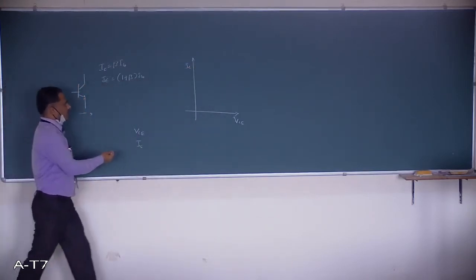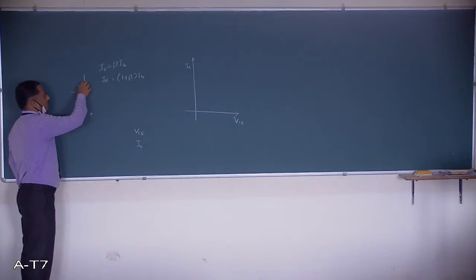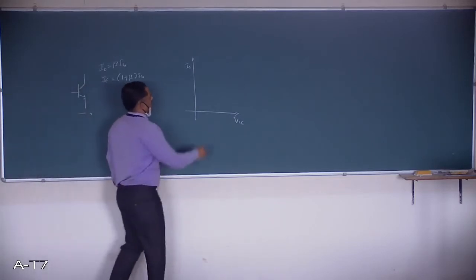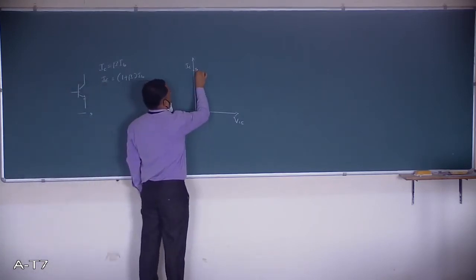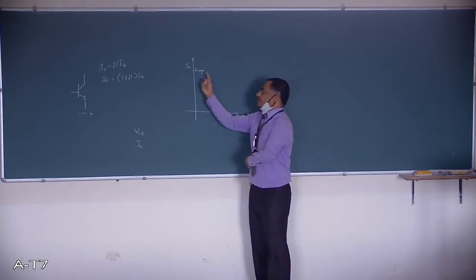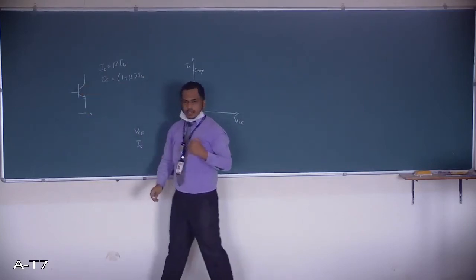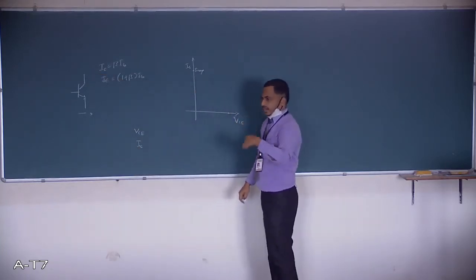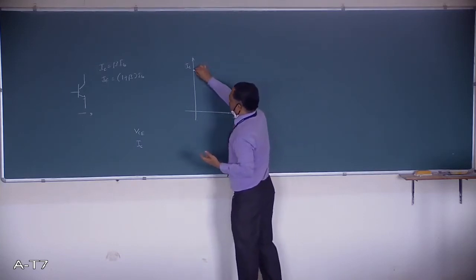If both PN junctions — base-to-collector and base-to-emitter — are forward biased, the current reaches its maximum and the voltage across the device is zero. This operating point is IC max, and we identify this as the saturation region. When both junctions are reverse biased, the maximum voltage appears across the device and the current becomes zero — this is the cutoff point.